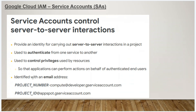A service account looks like this: project-number compute at developer.gserviceaccount.com — that is a service account for Compute Engine. And project-id at appspot.gserviceaccount.com — that is an App Engine service account.